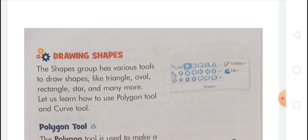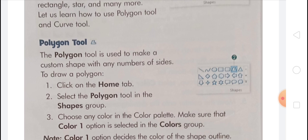A polygon has many sides; a rectangle or triangle can also be considered a polygon. The polygon tool is used to make a custom shape with any number of sides. To draw a polygon: first, click on the Home tab. Second, select the polygon tool in the shapes group. Third, choose any color in the color palette — make sure the color 1 button is selected in the colors group. Note: the color 1 option decides the color of the shape outline.